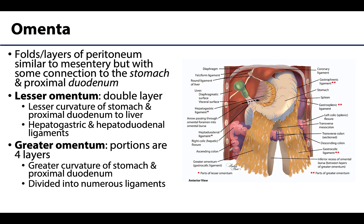Moving to the omenta — omenta and mesentery are made of the same thing, but what is unique is that the omenta all have some form of attachment to the stomach and the proximal duodenum, or the first part of the duodenum. Because of this it is special and gets its own name — it's basically a mesentery associated with these two structures.